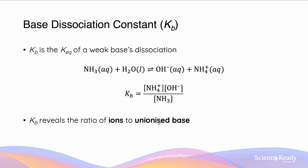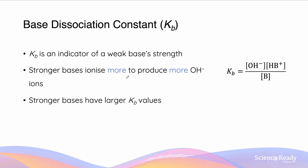Kb is the weak base's dissociation constant, much like Ka is the acid's dissociation constant. In the same way, Kb reveals the ratio of ions to unionized base. Kb is an indicator of weak base strength — stronger bases ionize more to produce more OH⁻ ions, so a strong base has a large Kb, just as a strong acid has a large Ka.